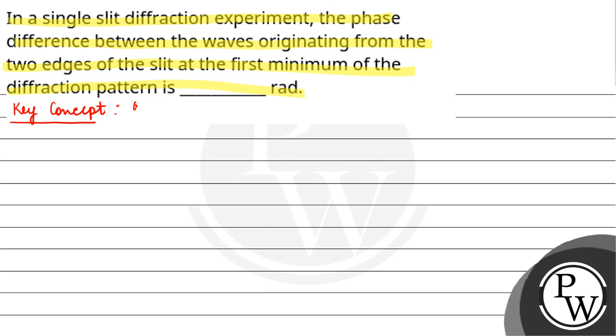In case of single slit diffraction, path difference between the waves is equal to (2n-1)λ/2, where n is 1, 2, 3 and so on. So here I will tell you: